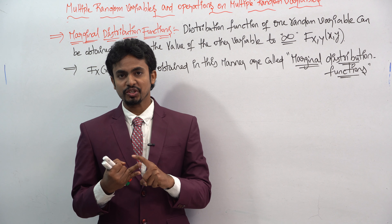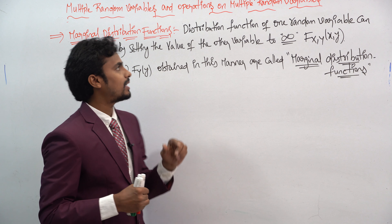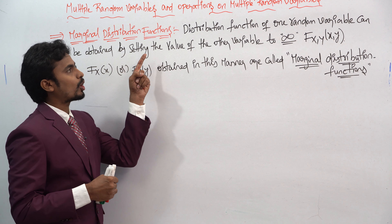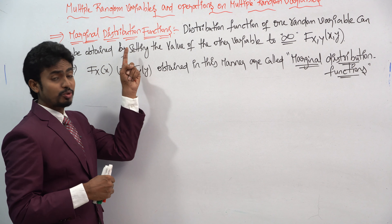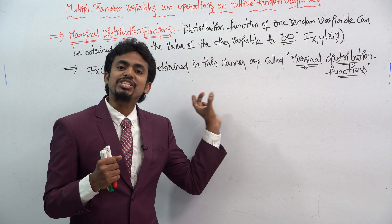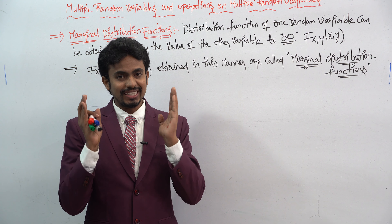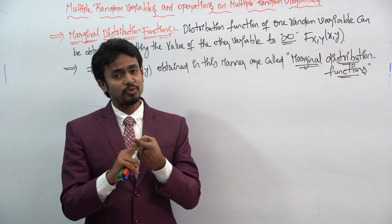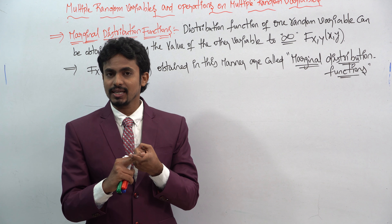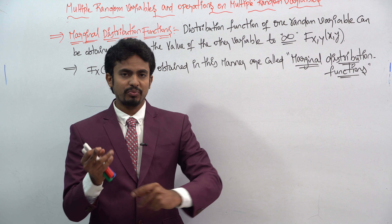We already saw the concept of joint distribution functions as well as the discrete joint distribution function. Now let's see the other concept: marginal distribution functions. You already know the distribution function, which can be represented with capital F. When taking the marginal distribution function, the main thing to remember is that we are considering multiple random variables.